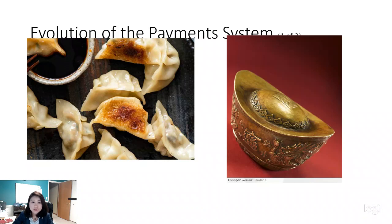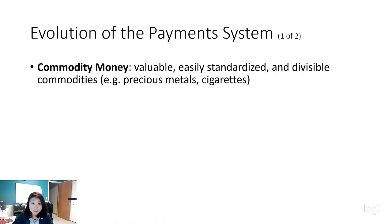During the New Year, one of the wishes people would have is to get rich in the coming year — so that is the food they make to mimic the shape of old currencies. This kind of currency is not unique to China; the Romans also had currency that was very heavy, usually made of precious metals. This type of currency is called commodity money.